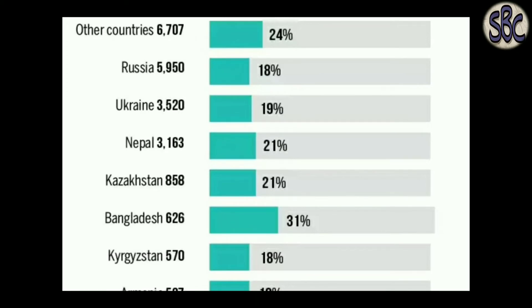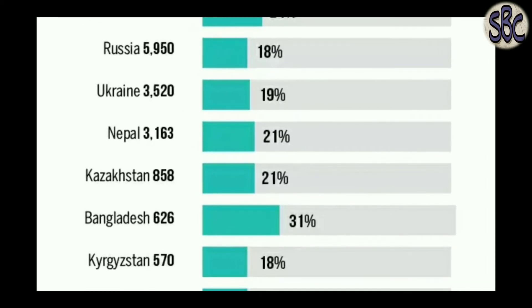For Ukraine: 5,950 students appeared for FMG, and 18% passed. For Russia: 3,520 students appeared, and 19% passed.